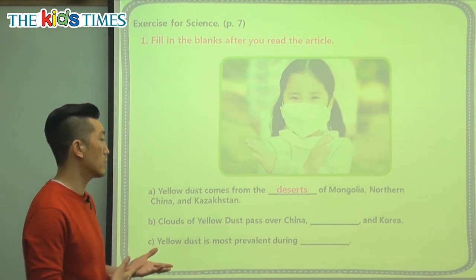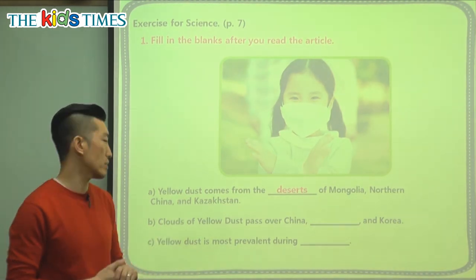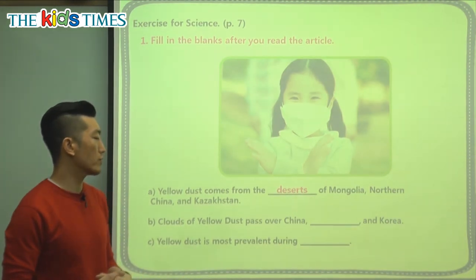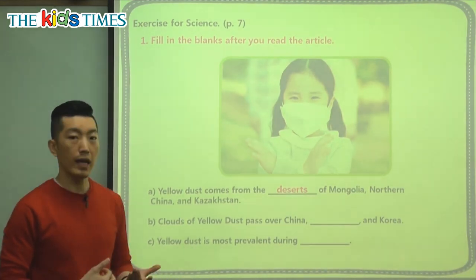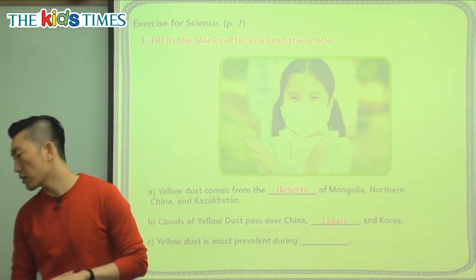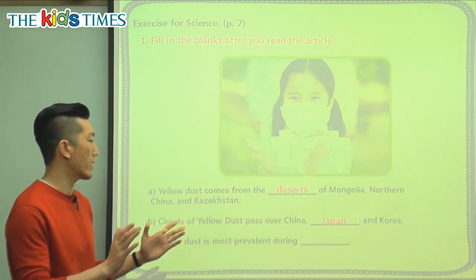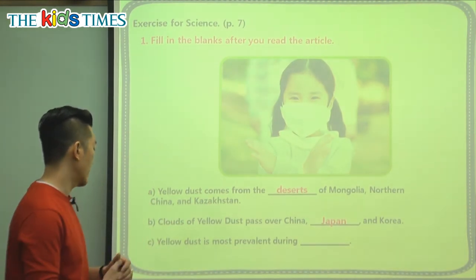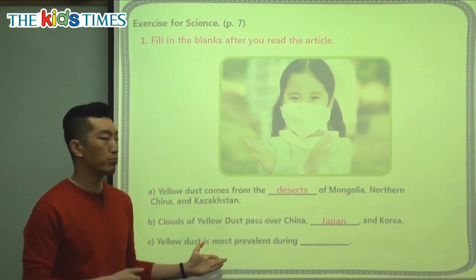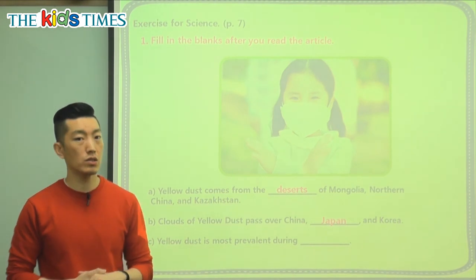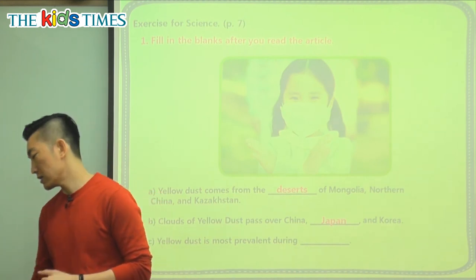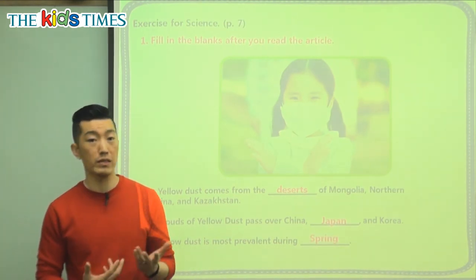Clouds of yellow dust pass over China, Japan, and Korea — it sweeps through this area of Asia. Yellow dust is most prevalent during which season? Not in the winter and not in the hot summer, but we see it right now in the springtime. That's why a lot of people wear their masks and we need to be careful.